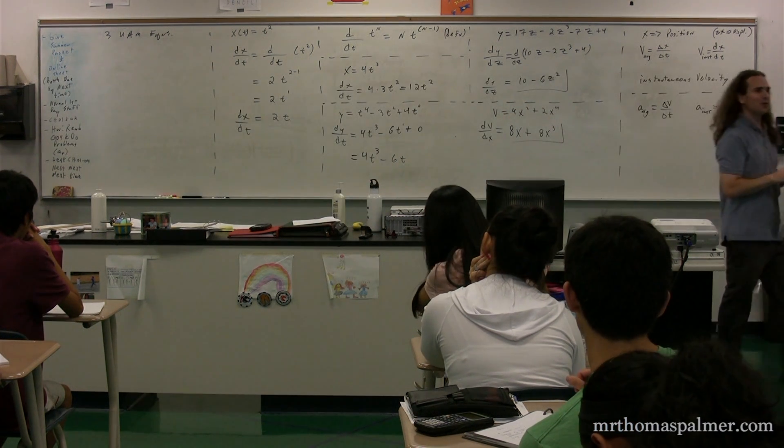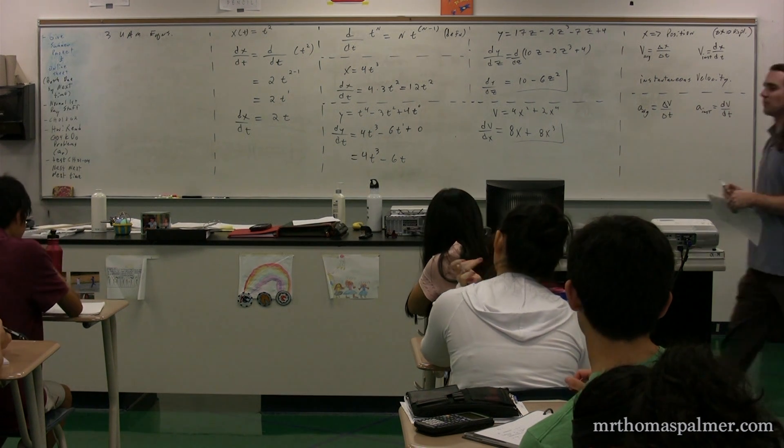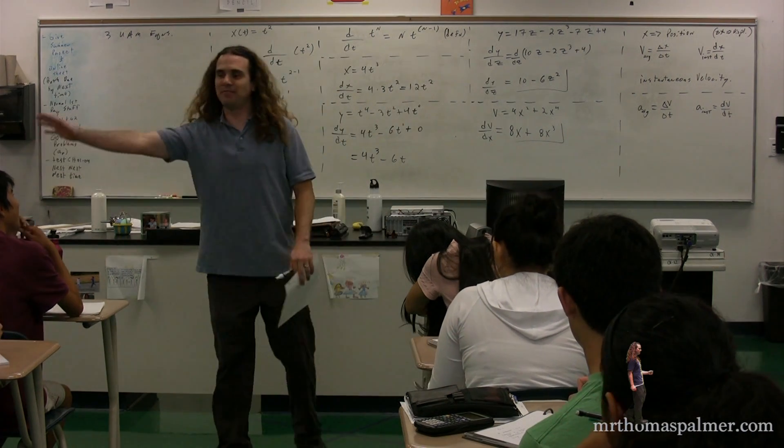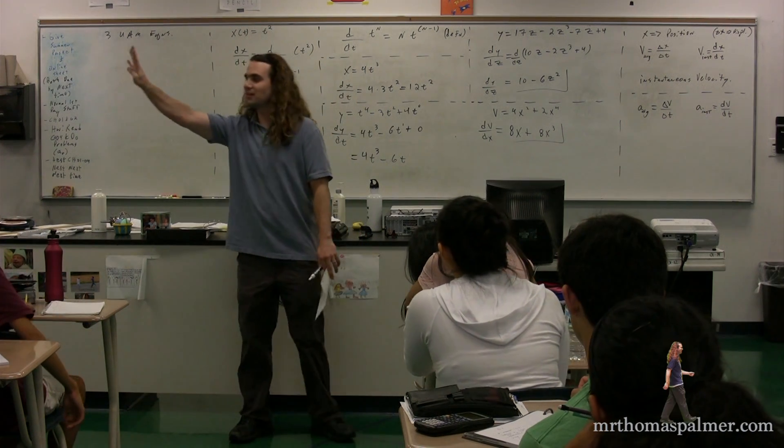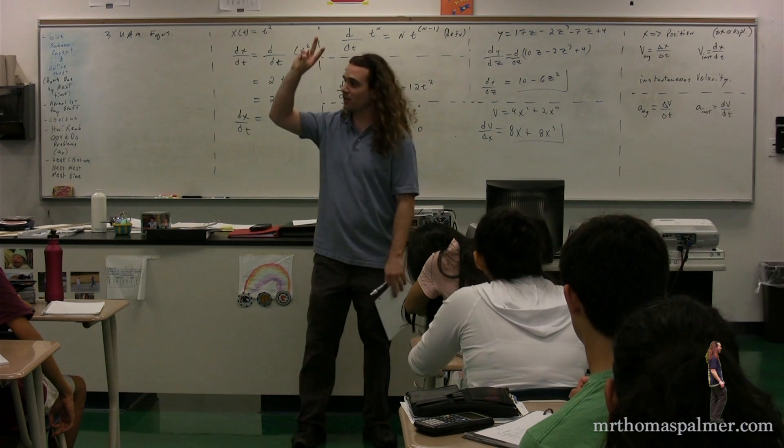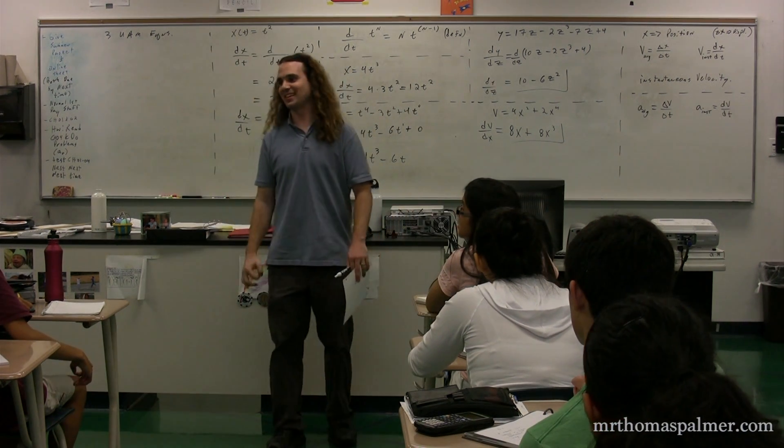UAM stands for uniformly accelerated motion. Class, how many variables are there in UAM? Five. How many equations? Four. How many knowns do you need to know? Three. In order to figure out the other? Two, which leaves you with one happy physics student.